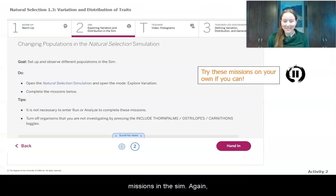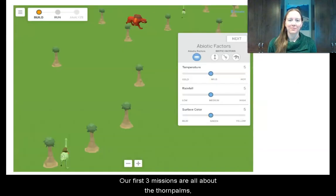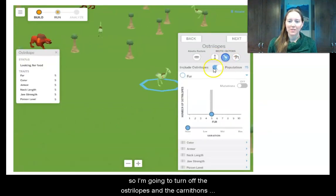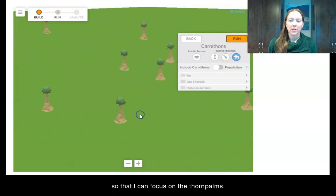Now we're going to try some missions in the sim. Again, if you're logged in, go ahead, pause this video and try them on your own. But if you're not logged in, don't worry, I'll take you through the missions right now. Our first three missions are all about the thorn palms. So I'm going to turn off the ostrilopes and the carnathons so that I can focus on our thorn palms.